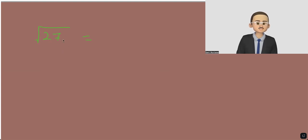So the nearest perfect square number to 27 is 25. So let's change this to 25 plus 2, which is 27.